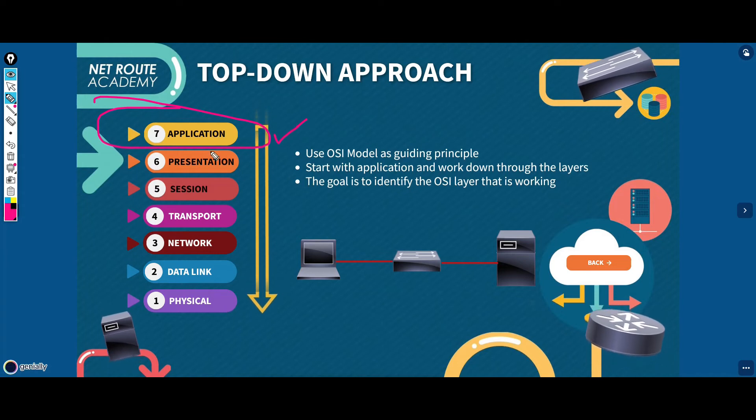You usually choose the top-down approach when you believe that the problem is most likely at the application or other upper OSI layers. The common reasons for believing that the reported problems are related to users, applications, or at least upper OSI layers include the following: